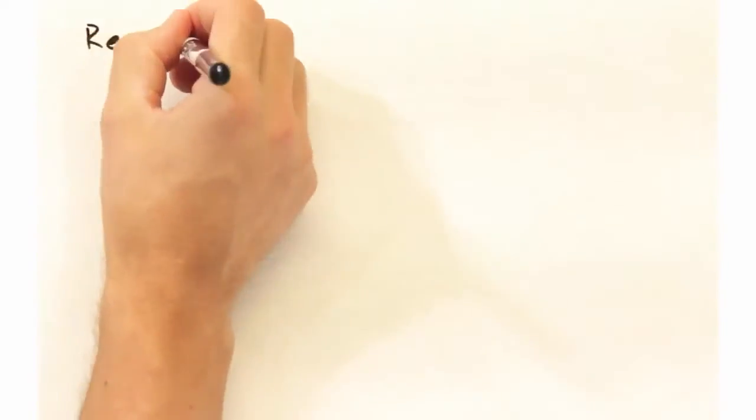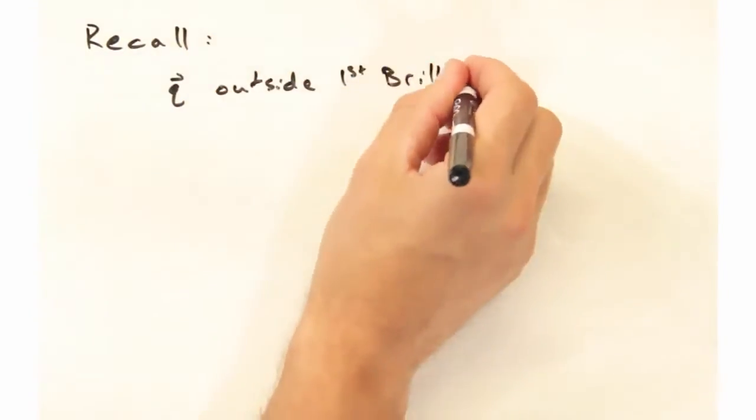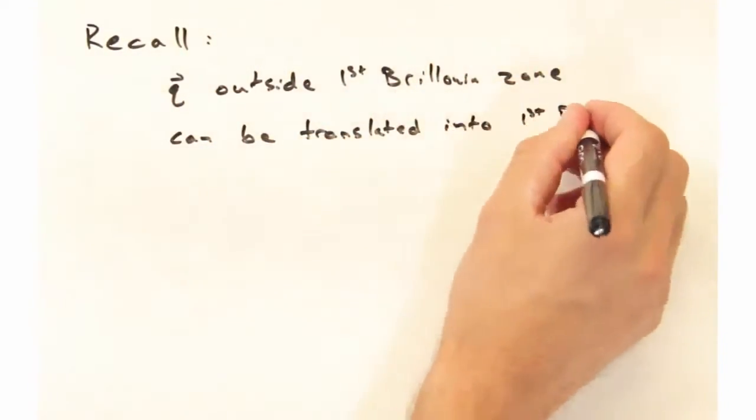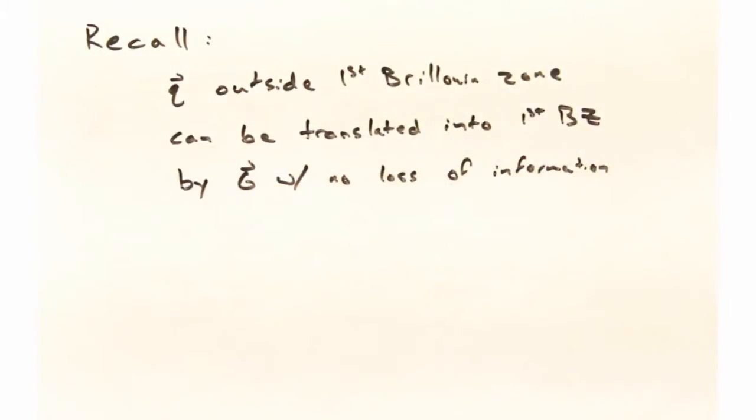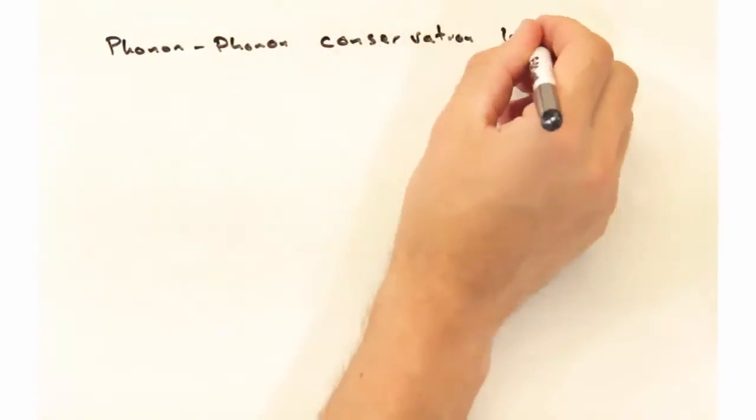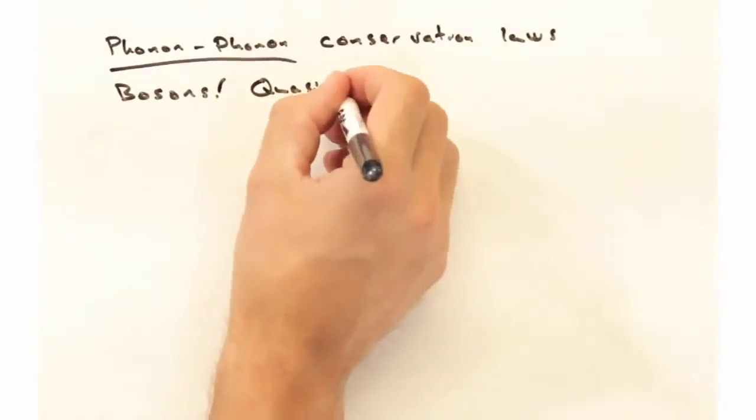The first thing to do is recall that for phonons outside of the first Brillouin zone, these phonons can be translated back into the first Brillouin zone by some reciprocal lattice vector g with no loss of information. This was the whole Nyquist frequency argument. So when it comes to phonons scattering off of other phonons, we have to think about conservation laws.